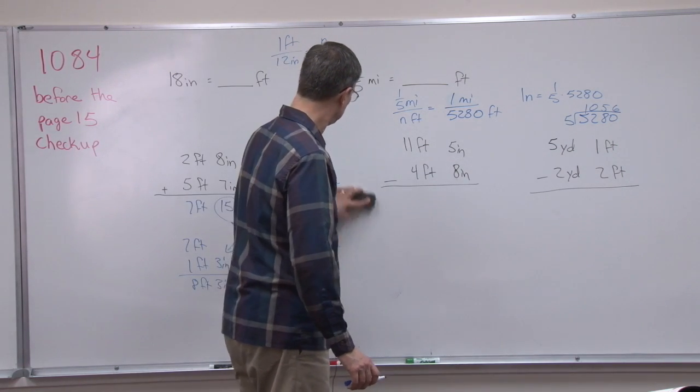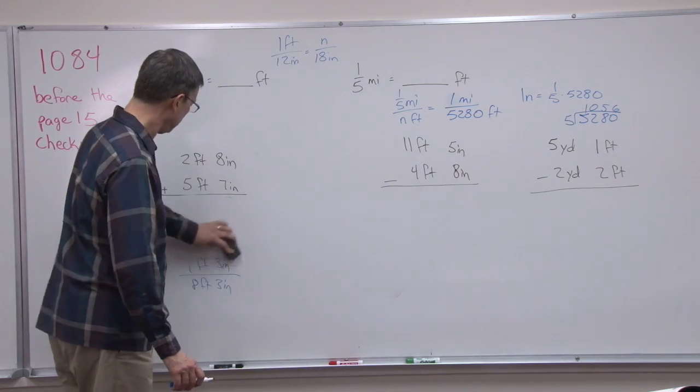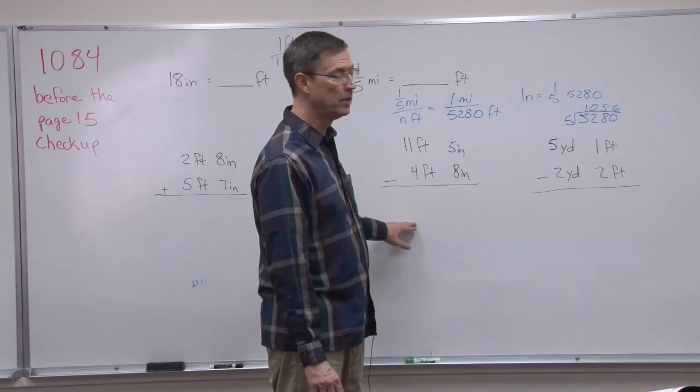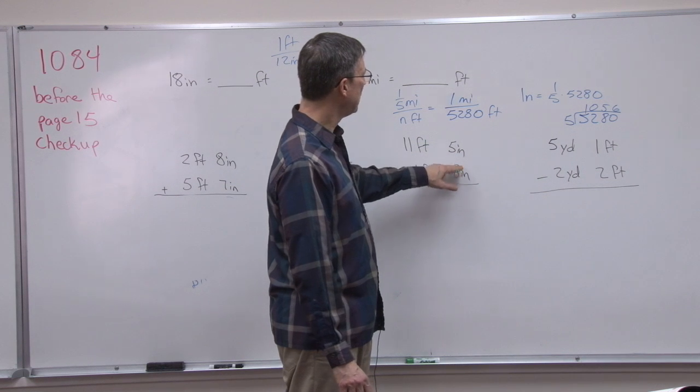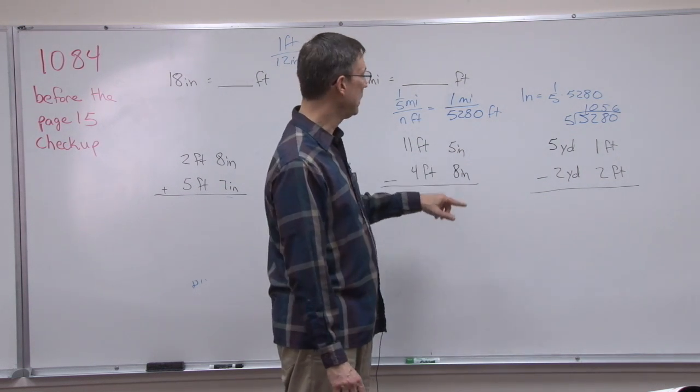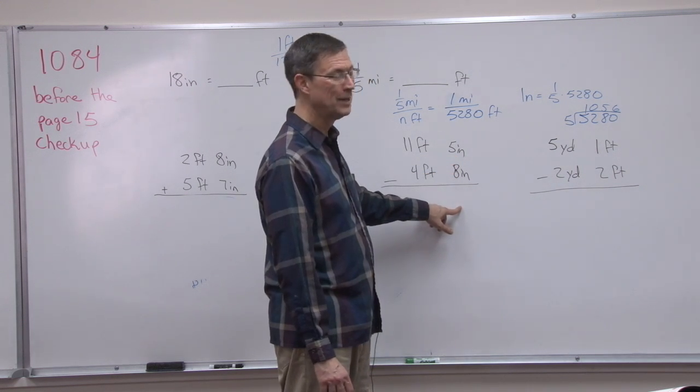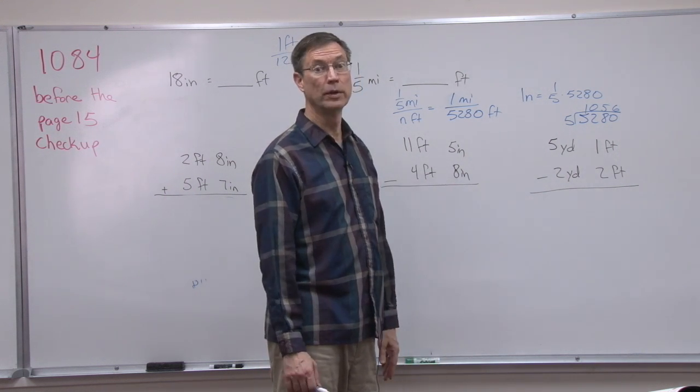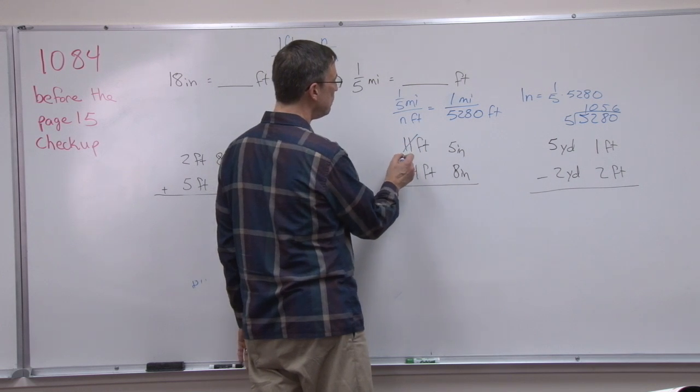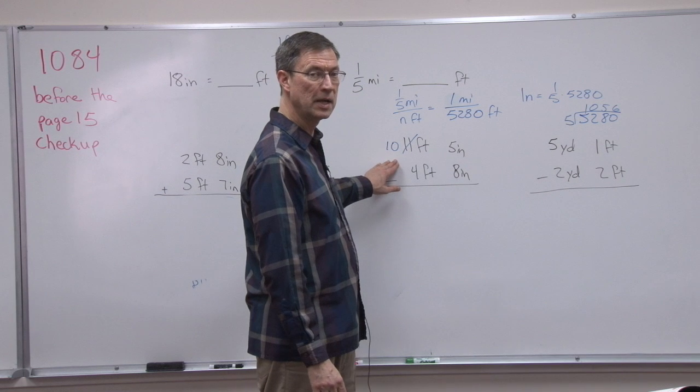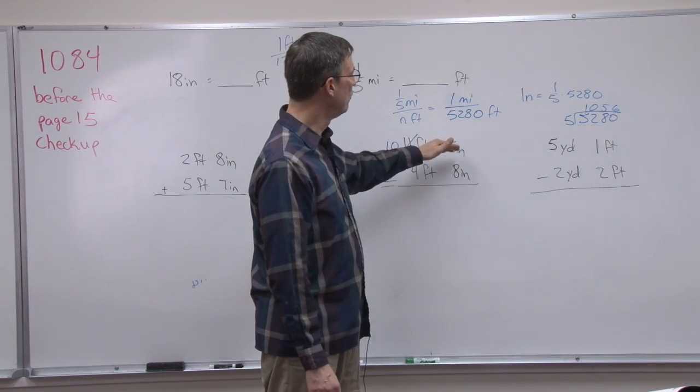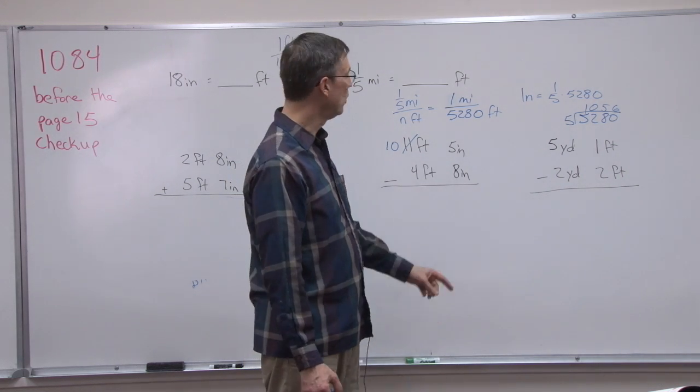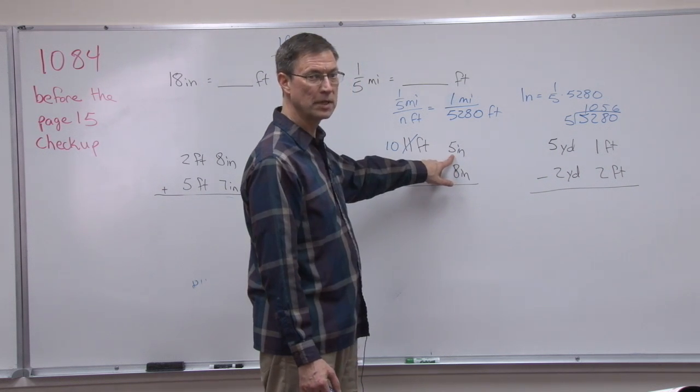Let's talk about subtracting. I can easily subtract 11 minus 4 and get 7, but I'm supposed to subtract 8 from 5. Now, don't make the mistake of thinking, oh, I can subtract 5 from 8 and get 3. We can't do that. We have to subtract 8 from 5, and that would give me a, I just can't do it. So what we're going to do is borrow 1 foot. So we're going to change this to be a 10. But now when we bring that foot over, how many inches are in 1 foot? 12 inches, right?